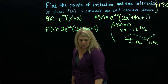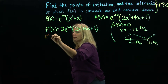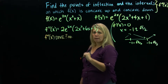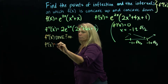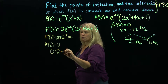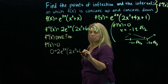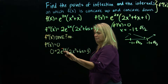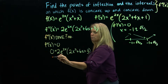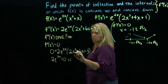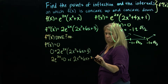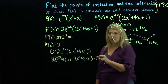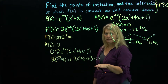From here we do the same process as before — looking at where the second derivative does not exist at points in the domain of the original function; we have none of those here. So I'll set this second derivative equal to zero and solve for x. Since it's in factored form, either 2e to the 2x equals zero or the quadratic expression equals zero. Since e to any power is never zero, the only hypercritical points come from setting the quadratic factor equal to zero.